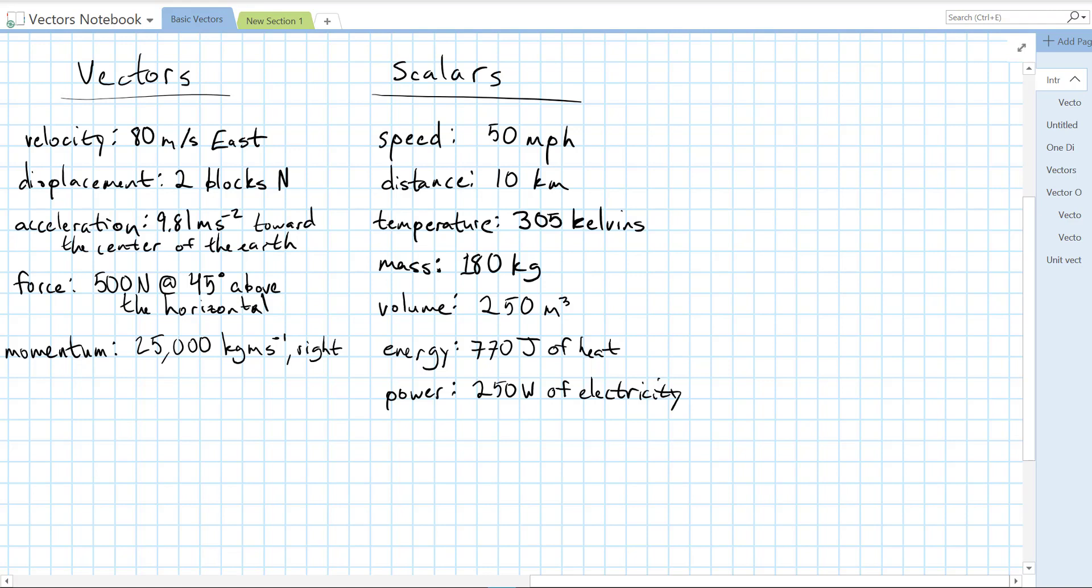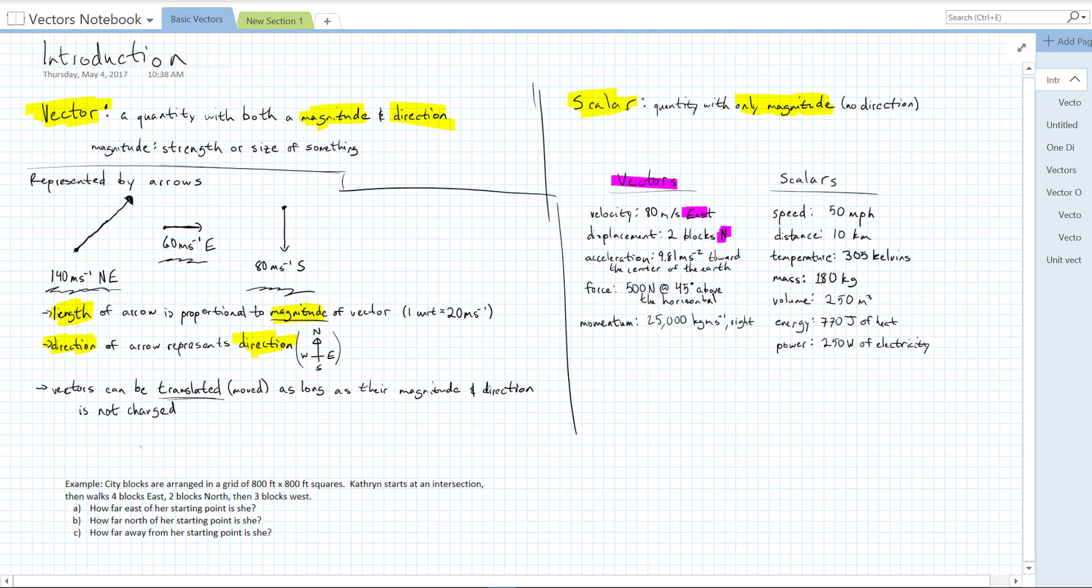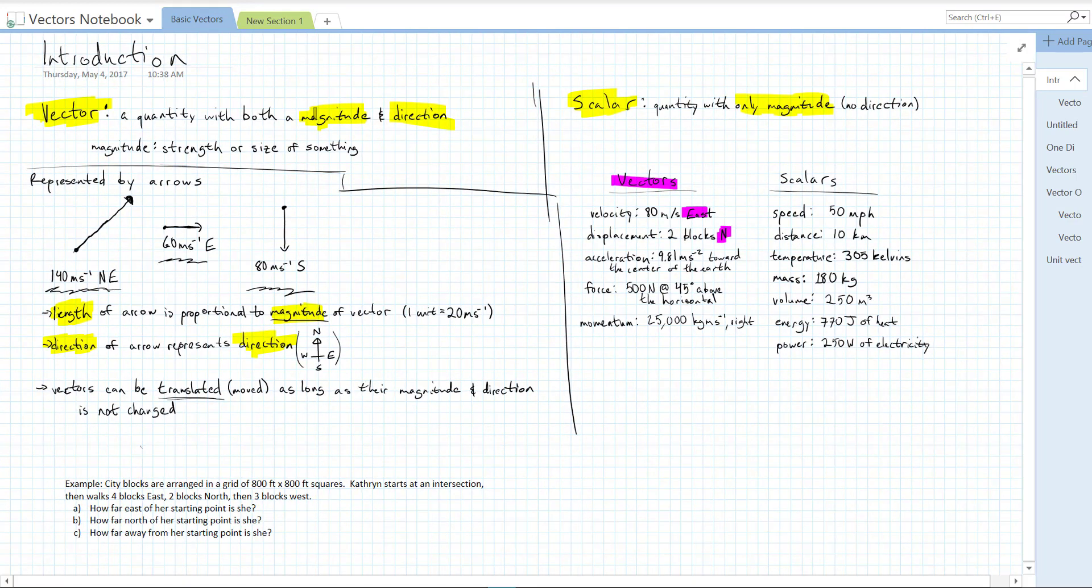So you may start to notice the difference here. A scalar is just a normal number. It can have units, but it's just a standard number. A vector has a direction attached to it. And our more formal definition of vectors and scalars: a vector is a quantity with both a magnitude and a direction. And a scalar is a quantity with only a magnitude. It doesn't have direction.